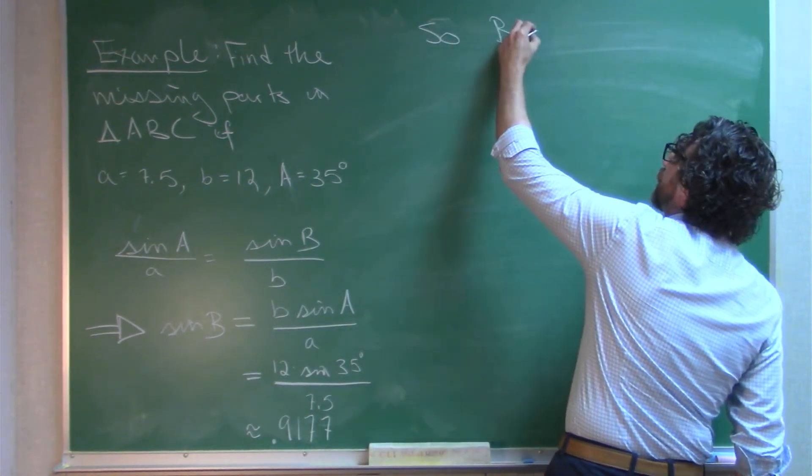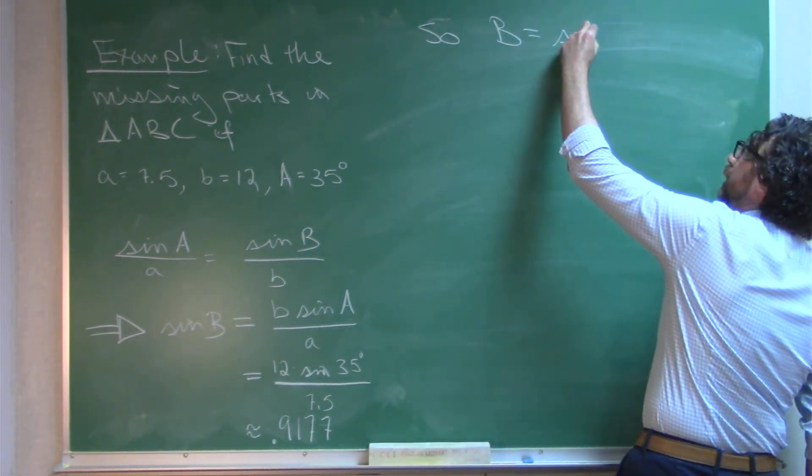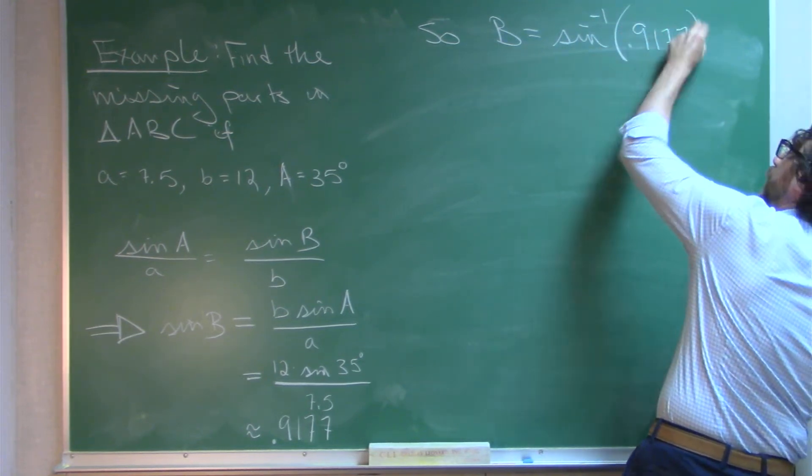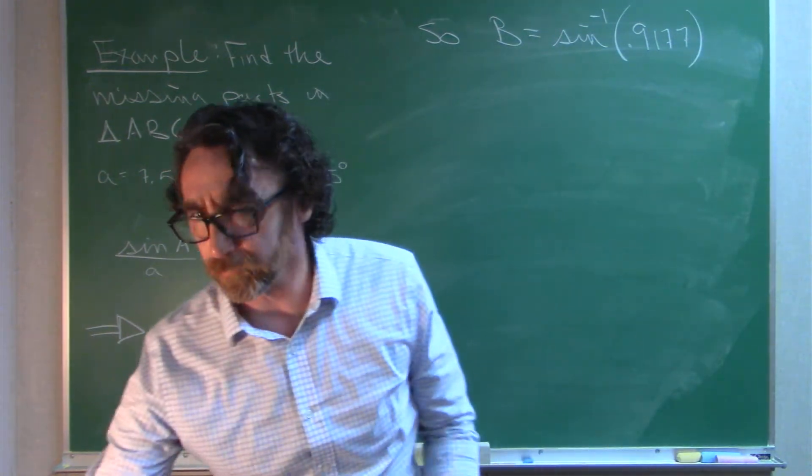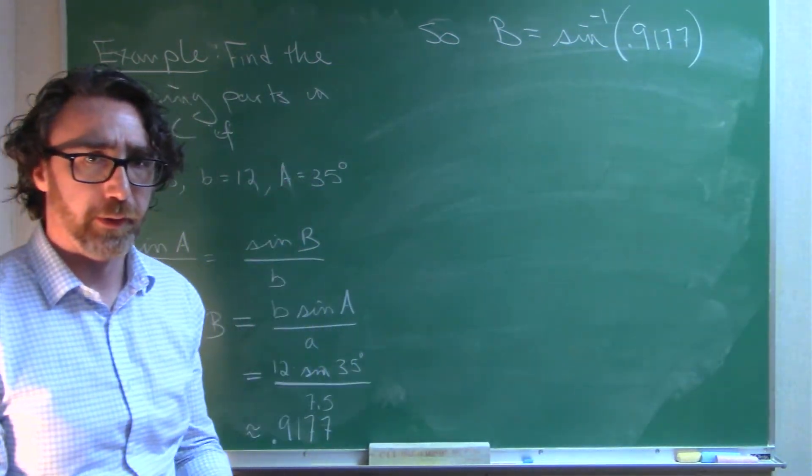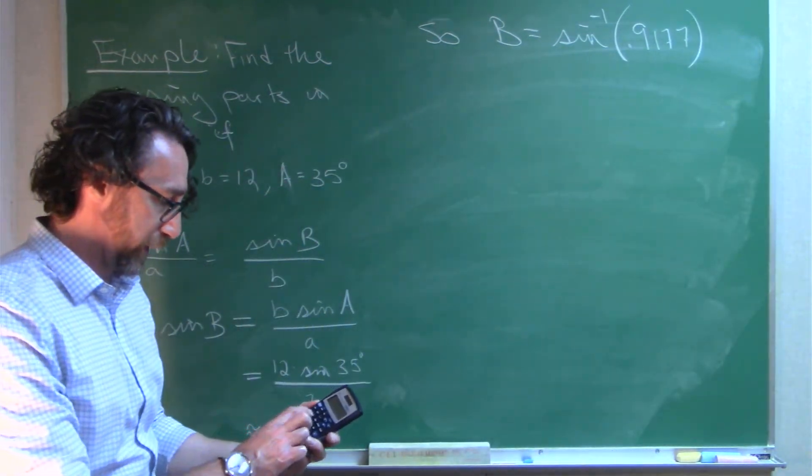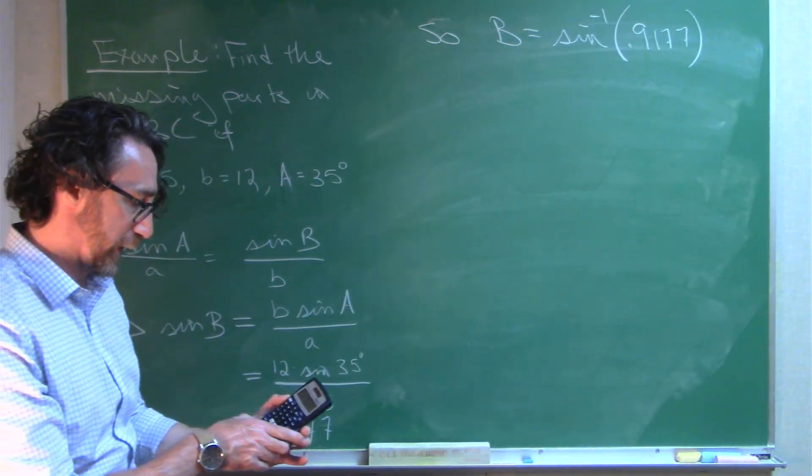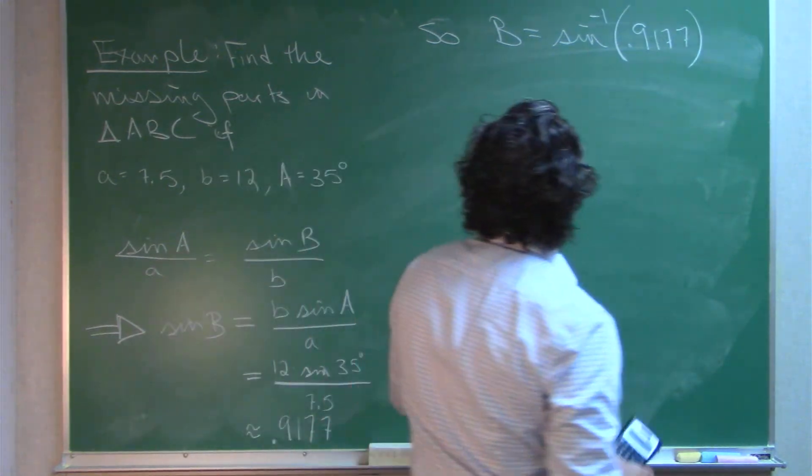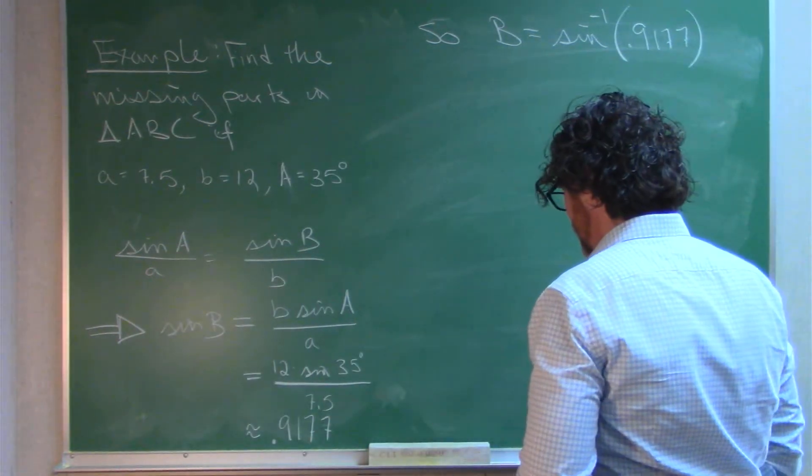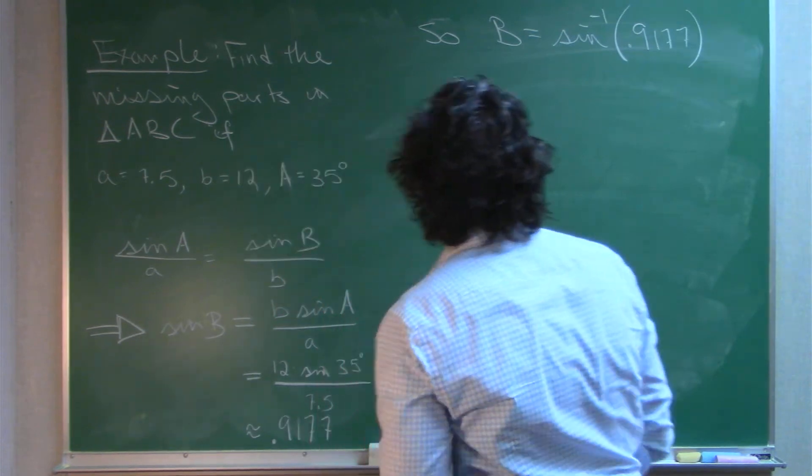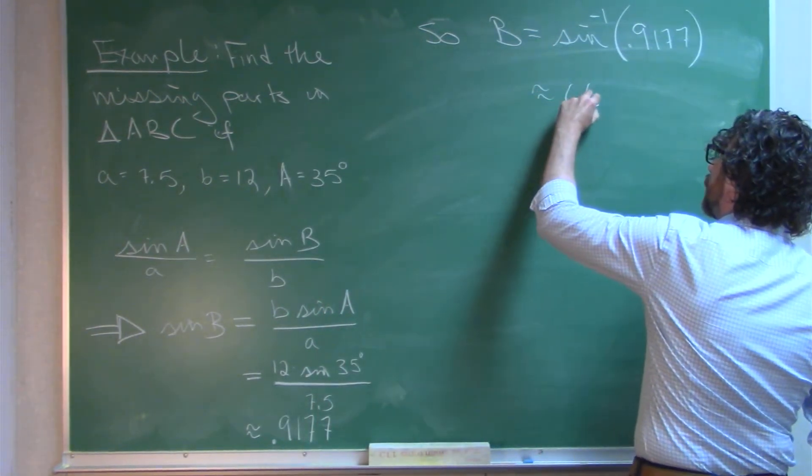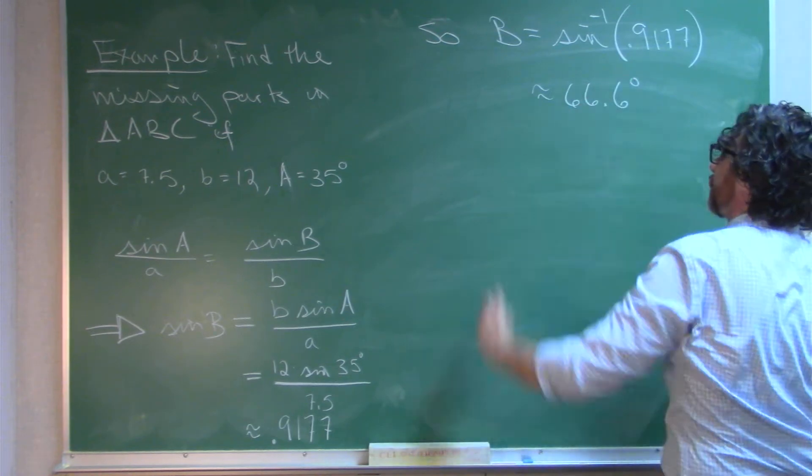Okay, so B would be sine inverse of 0.9177. If you have this type of calculator, you can do sine inverse and then answer. And it'll take the sine inverse of the answer it just gave you. Okay, so this is approximately 66.6 degrees.